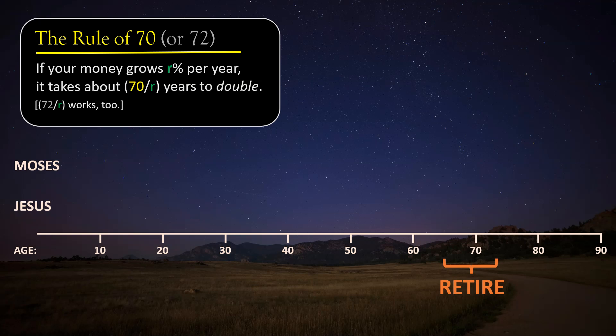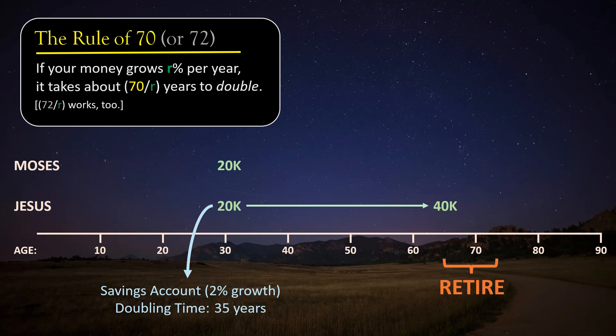At the time our story begins, these two friends are 30 years old, and each of them decides to put away $20,000 towards their retirements. So, what do they do with their money? Well, Jesus saves, so he goes to the bank and puts his money in a savings account, where it earns 2% interest per year, and he's not going to touch that money until he retires. The Rule of Seventy tells us that the doubling time for his money will be about 70 over 2, so about 35 years. So, in 35 years, when he's 65 years old and thinking about retiring, his $20,000 will have doubled to $40,000. Not bad.